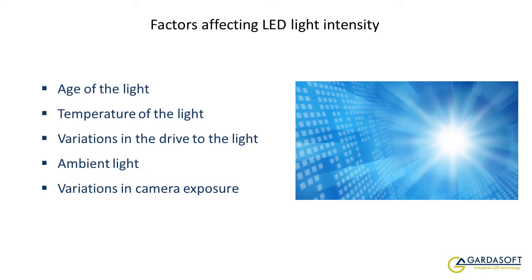By reducing the exposure time, the effect of ambient light can be reduced. We show a demonstration shortly which illustrates the control of the machine vision light compensating for changes in ambient light. When using pulse lighting, it is essential to get the timing of the lighting pulse and the camera exposure perfectly aligned in order to optimise image brightness. If they are not aligned, the image will appear dark, or in the worst case, no image will be seen at all.